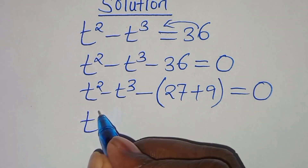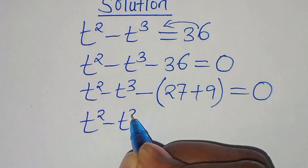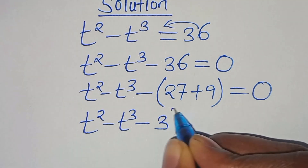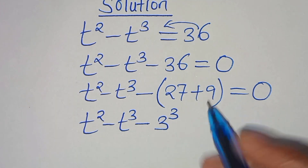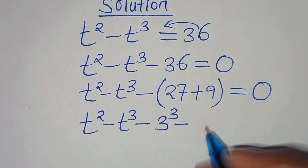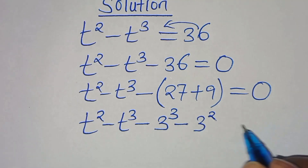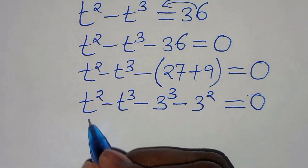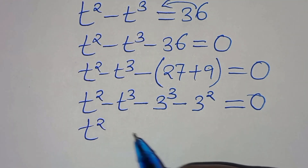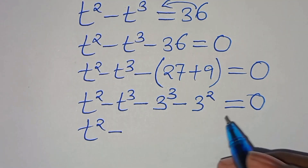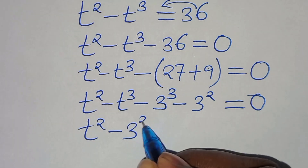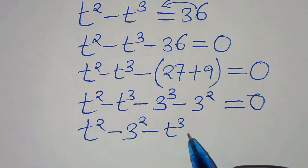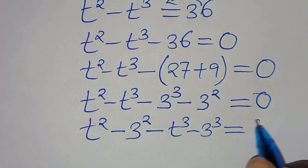So we have t squared minus t to the power of 3 minus 27, and we can express 27 as 3 to the power of 3. Then minus 9, which we can express as 3 to the power of 2, this is equal to 0. Rearranging, we have t squared minus 3 squared, then minus t to the power of 3, then subtract 3 to the power of 3, this is equal to 0.